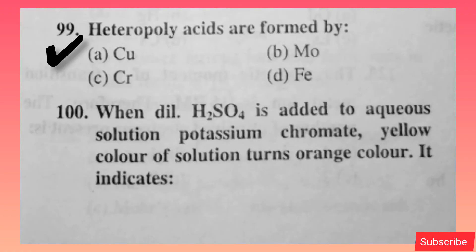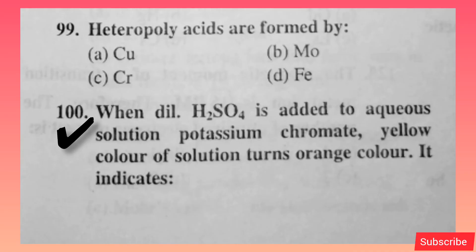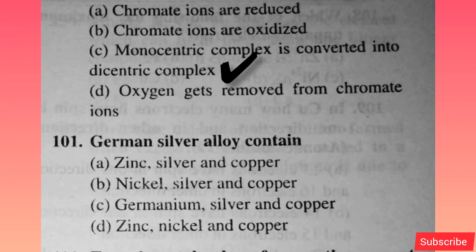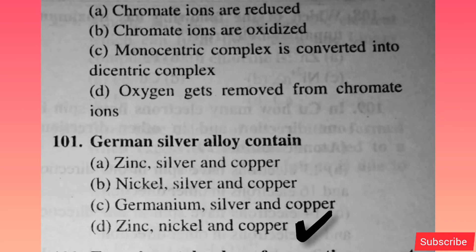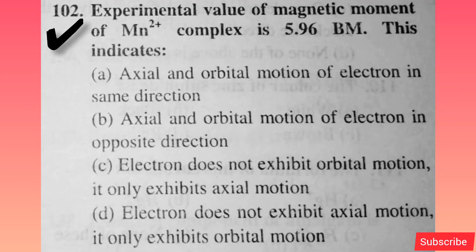Heteropoly acids are formed by — option B is correct. When dilute H2SO4 is added to an aqueous solution of potassium dichromate, yellow color of solution turns orange. It indicates — option C is correct. German silver alloy contains — option D is correct. Experimental value of magnetic moment of Mn2+ complex is 5.96 BM — this indicates — option A is correct.